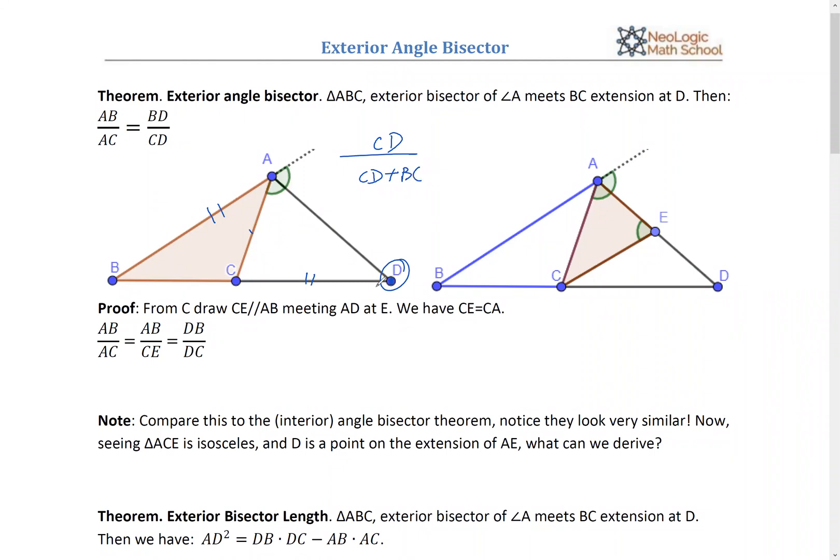CD divides CD plus BC, that's CD over BD, right? This should equal to AC divides AB. For example, right? So with this, you can solve CD now, right? You can find the location of point D, right? Just by knowing this ratio. And we should see a little application data today.